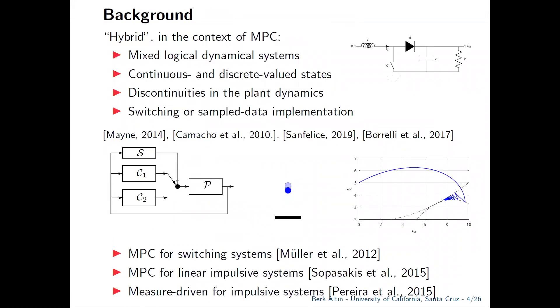Before we move forward, let me note that the word hybrid refers to a variety of things in the MPC literature. For example, it refers to discontinuities in the right-hand side of the plant dynamics, or it refers to systems where the state can be partitioned as continuous-valued and discrete-valued.